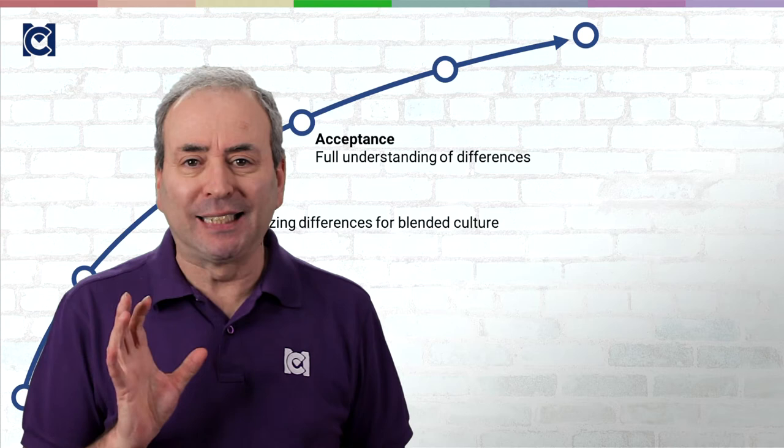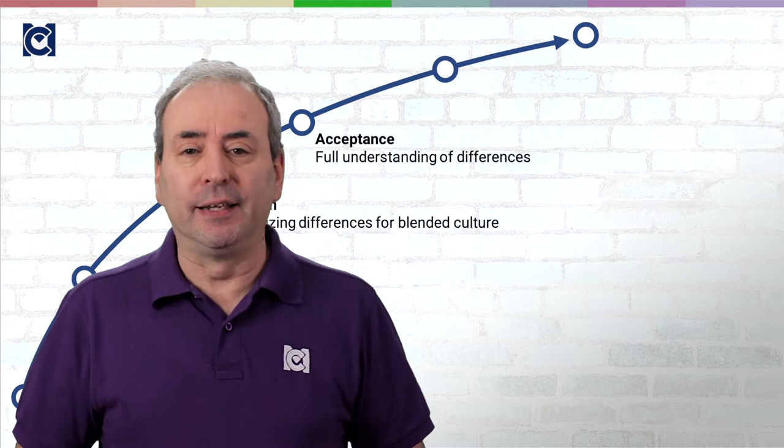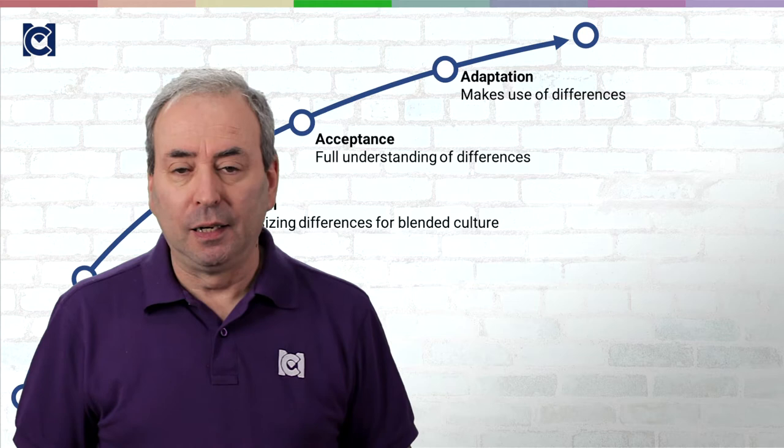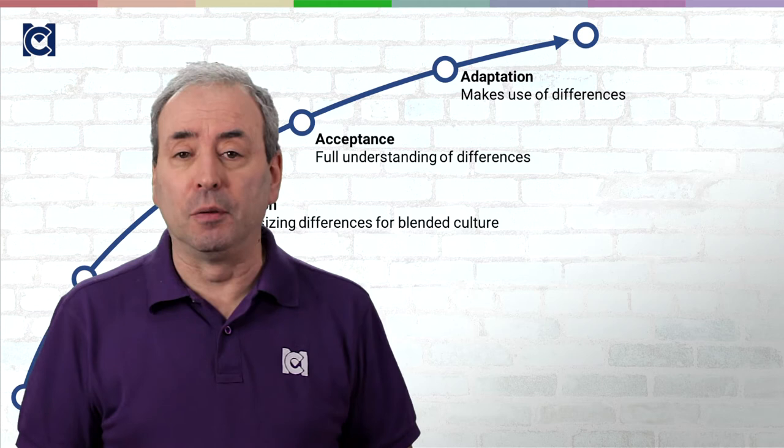At level four we have acceptance and this is a proper recognition of the differences and importantly accepting that those differences are fair, valid and part of the team itself. But it's only at the fifth stage that we start to make use of those differences. This is the adaptation stage where the team adapts itself to the differences and starts to value them properly.